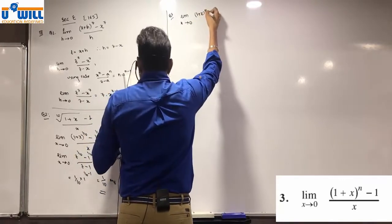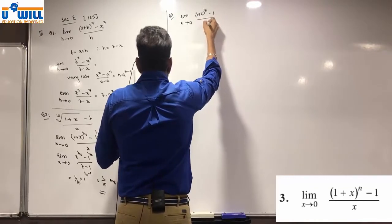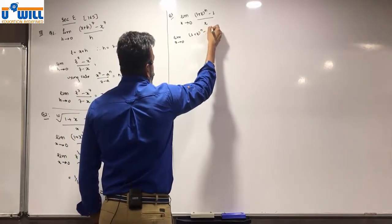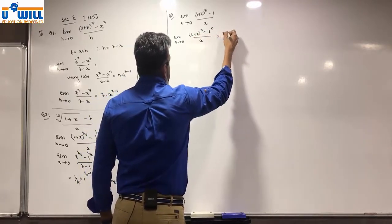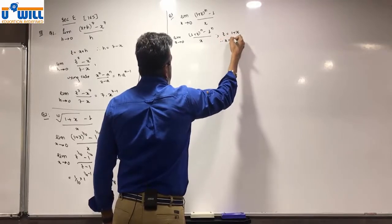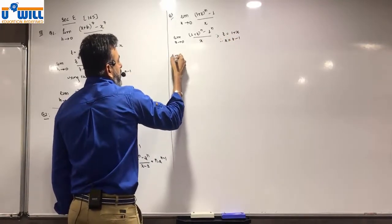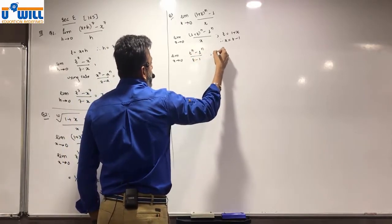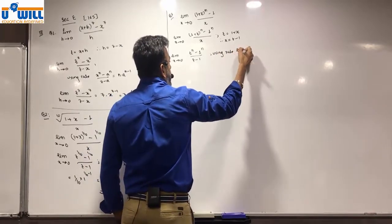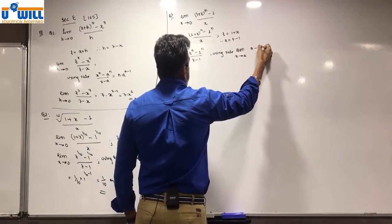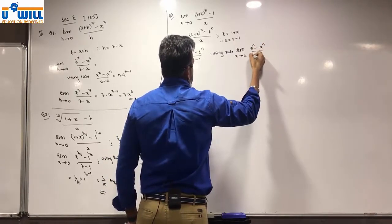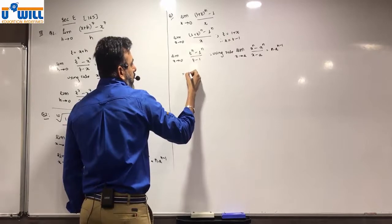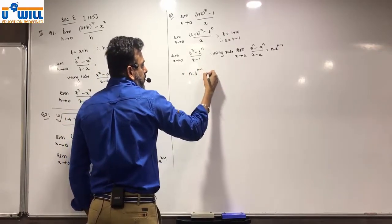Question 3: limit x→0 of [(1+x)^n - 1] / x. We take t = 1+x, therefore x = t - 1. So limit becomes [t^n - 1^n] / (t - 1). Using rule [x^n - a^n] / (x - a) = n·a^(n-1), this equals n · 1^(n-1) = n. Answer is n.